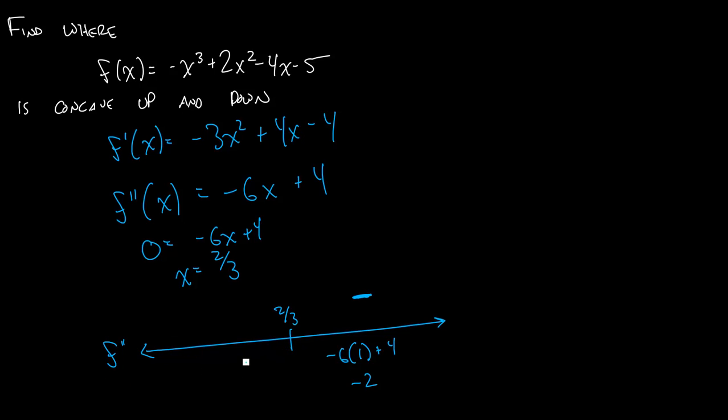If I want to check something to the left of 2 thirds, maybe I'd check zero. So negative 6 times 0 plus 4 is positive 4, and that tells us everything over here is positive.